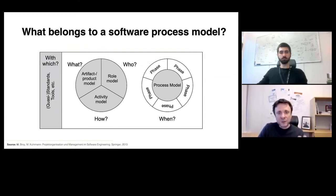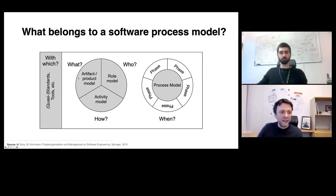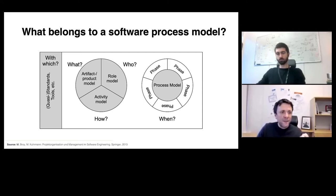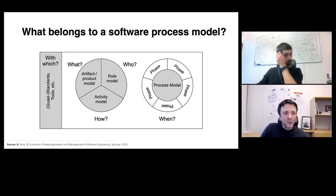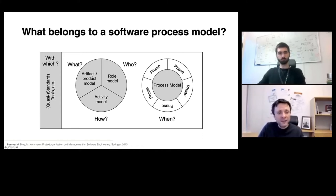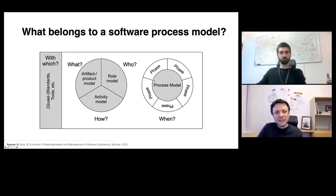The minimum needed to specify a software process model is covered by four essential questions. First: what is in scope — what work products do I need to create, such as a requirements specification, test specification, or architectural design? Second: how to work — covered by an activity model defining the way of working. Third: the role model defining who is responsible for which activity and artifact. Fourth: the when — a temporal order defined by phases and milestones.